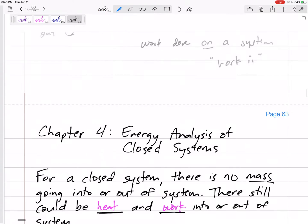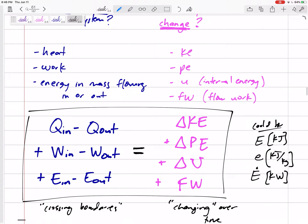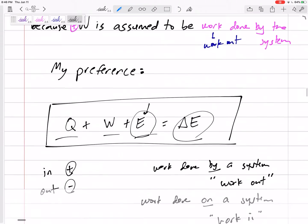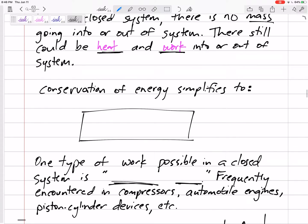So that big equation from the previous chapter, this equation right here, we're not going to have this energy going in or out. We're just going to have Q and W on the left-hand side of our equation. So we're going to have Q and W - if it's in, it's positive; if it's out, it's negative - and equals change in energy. That change in energy could be potential energy, kinetic energy, flow work, and internal energy right there.